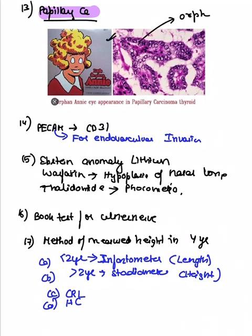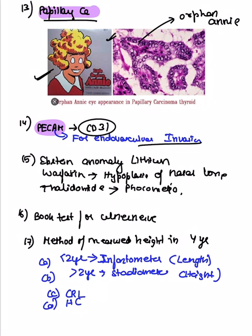Papillary carcinoma of the thyroid was asked — it shows Orphan Annie eye nuclei, where the eyes appear blank because the cartoonist forgot to draw the eyes. Also, CD31 (PCAM) was asked as a marker for endovascular invasion.